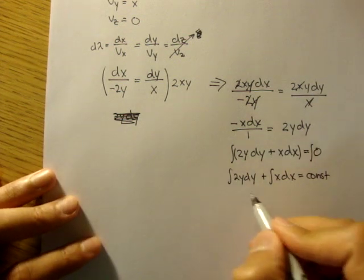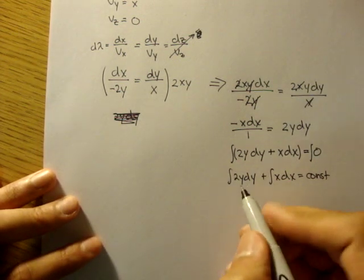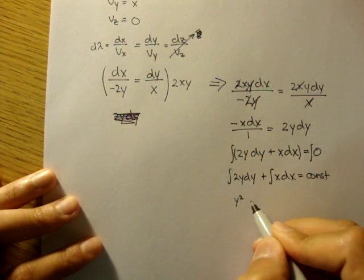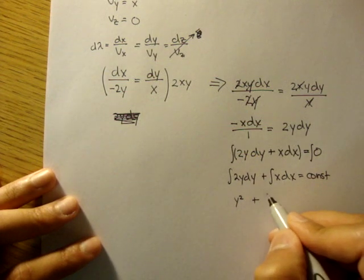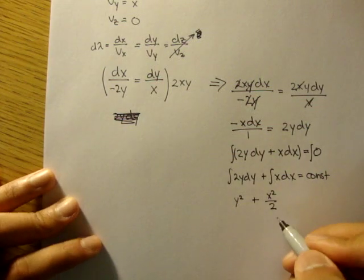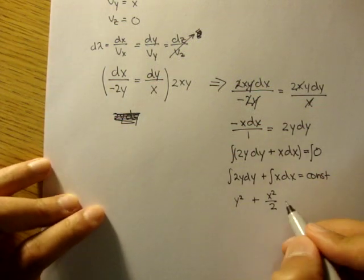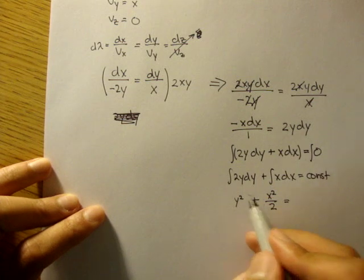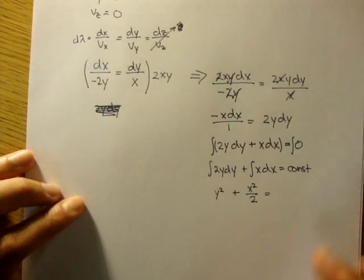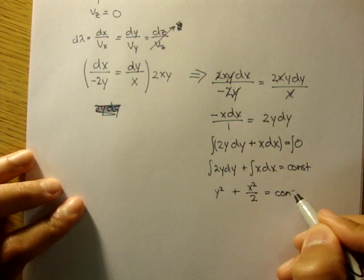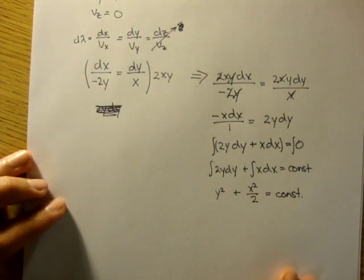And so integrate 2y dy, we get y squared plus integral of x dx is x squared over 2. And of course, there's constants here, but I'm just going to throw them all out on the right side of the equation, so we'll just get a constant.